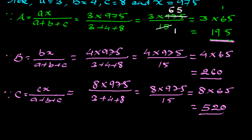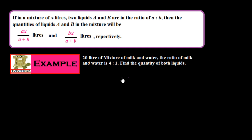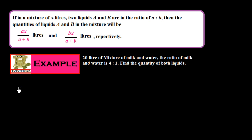Now we see another short trick which we can apply in mixture and alligation questions. If in a mixture of x liters, two liquids a and b are in the ratio of a to b, then the quantities of liquids a and b in the mixture will be ax/(a+b) liters and bx/(a+b) liters respectively. Example: 20 liters of a mixture of milk and water has milk to water ratio 4 to 1. Find the quantity of both liquids.